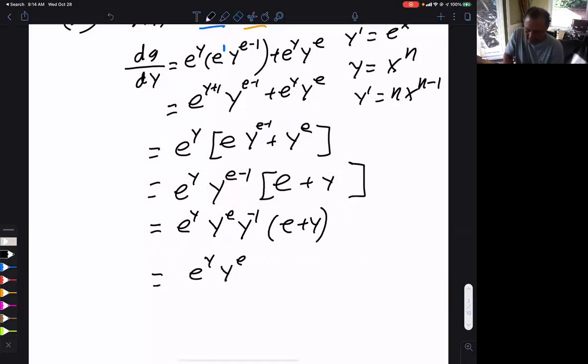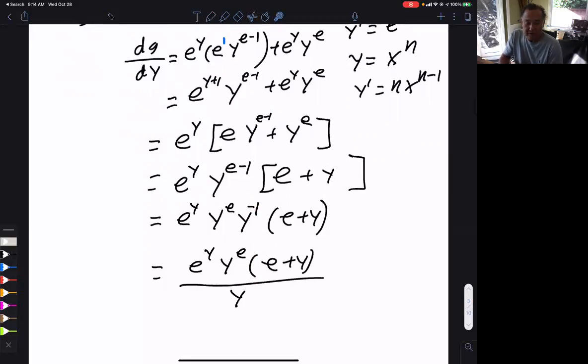Y to the e. E plus y. And that y moves to the bottom because the negative exponent says move to the bottom. I don't know what answer they have. It could have this answer. Could have that answer. Could have that one. I don't know. But that's a few ways to write the answer. Let me stop this video.